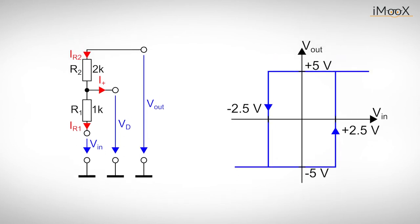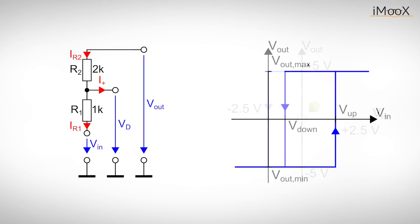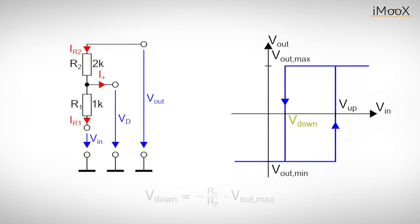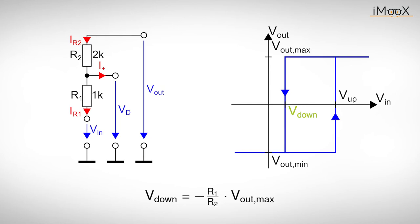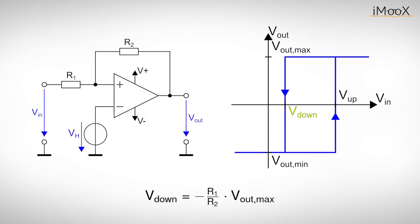This is fine, but what if we need a transfer function not centered around 0 volts? Maybe something like this. V_down is now positive, but the formula only allows for negative values. So how can we achieve a positive V_down?